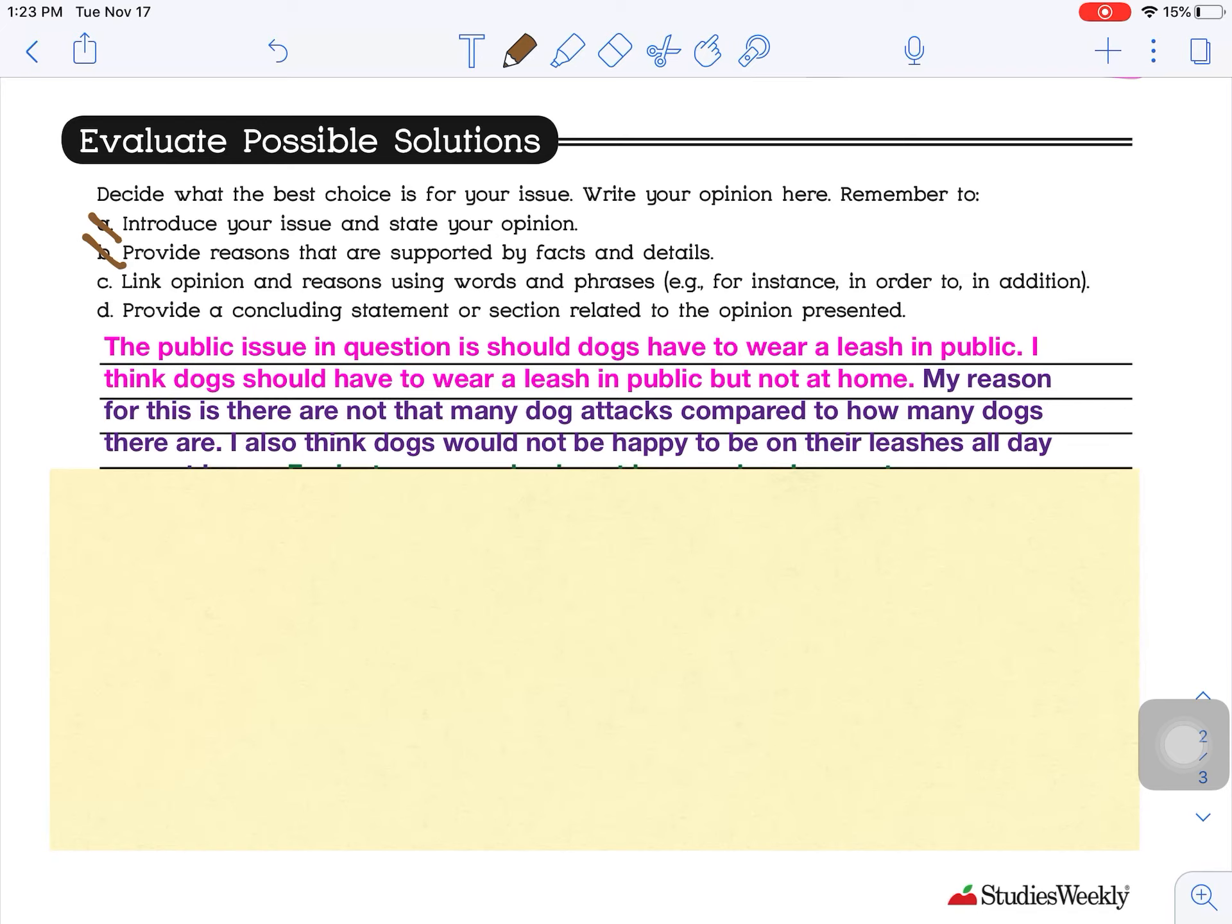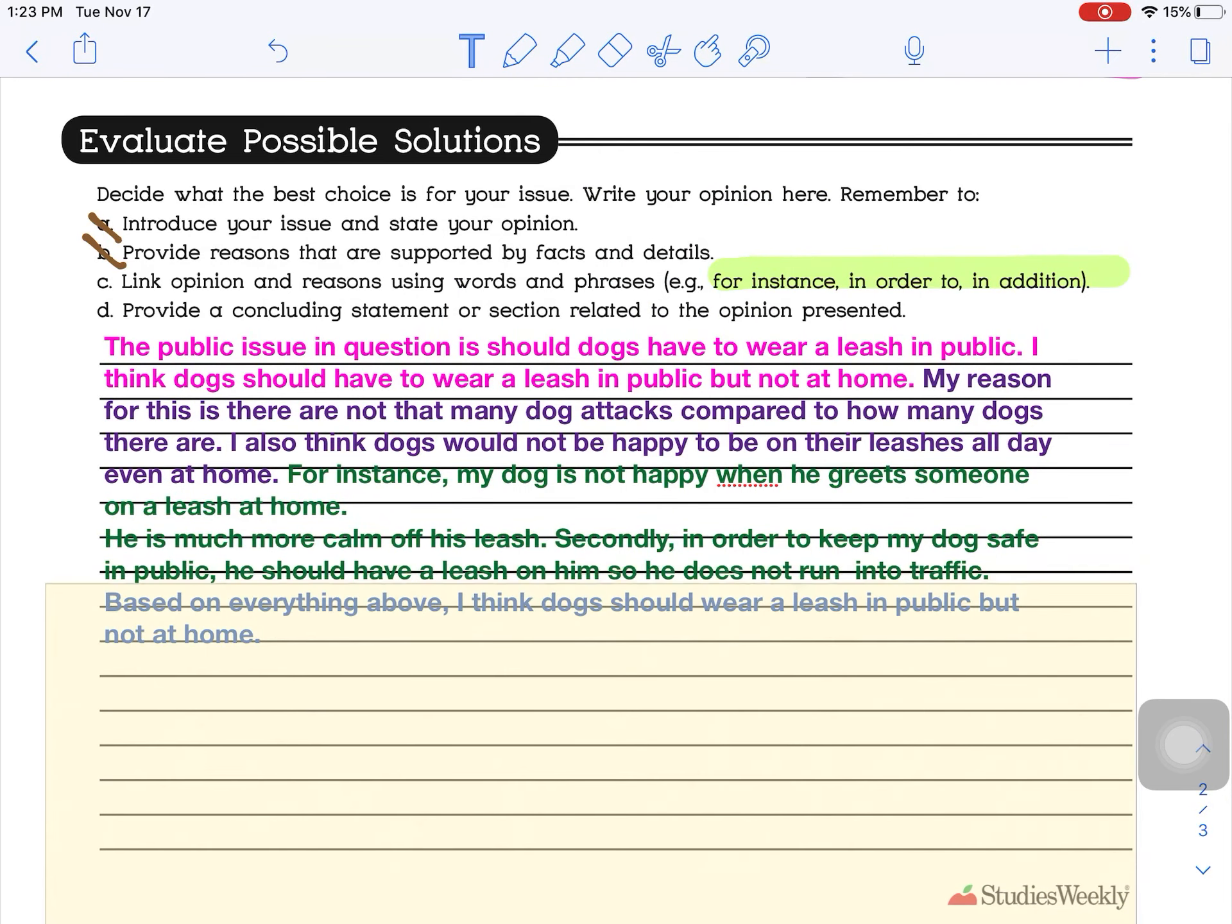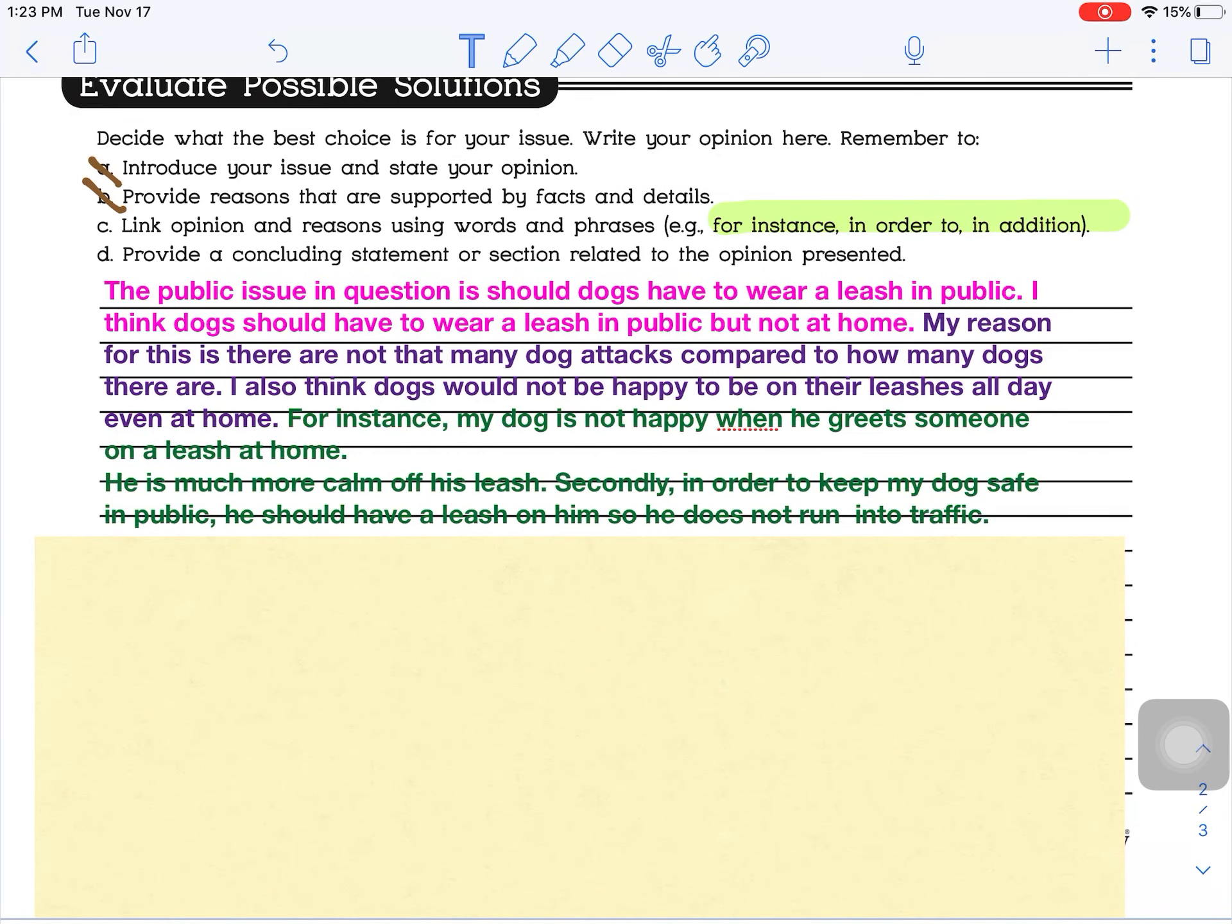C, link opinion and reasoning using words and phrases. So I'm going to put my own example of my own situation of how I can relate to this situation. And I'm also going to use these words up here, for instance, in order to, or in addition. So those are some of the words that you should be looking for as I write here. So link my opinion and reasoning, which I did that here. For instance, my dog is not happy when he greets someone on a leash. He is much more calm off his leash. Secondly, in order to keep my dog safe in public, he should have a leash on him so he does not run into traffic. So those are my two opinions there. I said why I think my dog should be on a leash in public, and why I think my dog should not have to be on a leash at home. So I put my own opinion, and I used those words for instance and in order to. So I use some of those keywords up there. So I can cross off C.